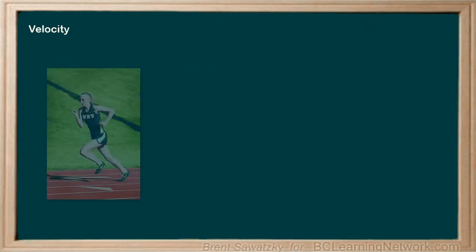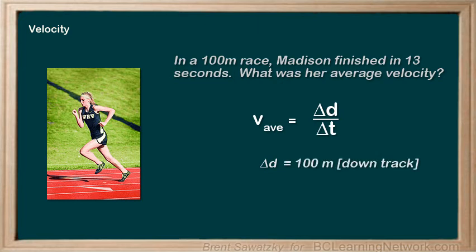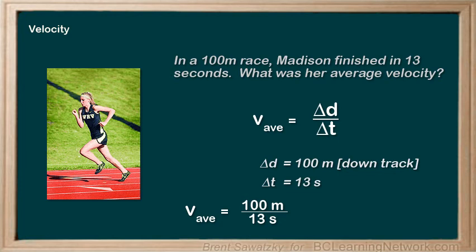Let's look at an example. In a 100 meter running race, Madison finished in 13 seconds. What was her average velocity? We write down our equation. The delta D, in this case, is the displacement or change in position — that's our 100 meters down the track. Delta T is the time it took for this displacement, or the final time minus the initial time. We know it took her 13 seconds to complete the 100 meters, so we can plug in our numbers and calculate the average velocity, with a little rounding, to be 7.7 meters per second down the track.